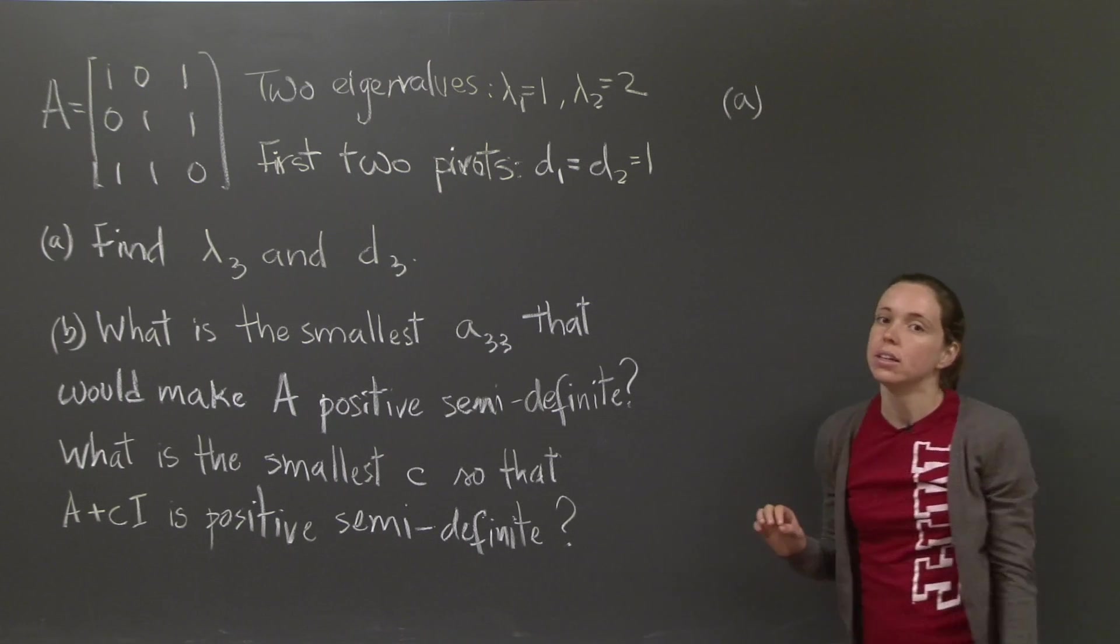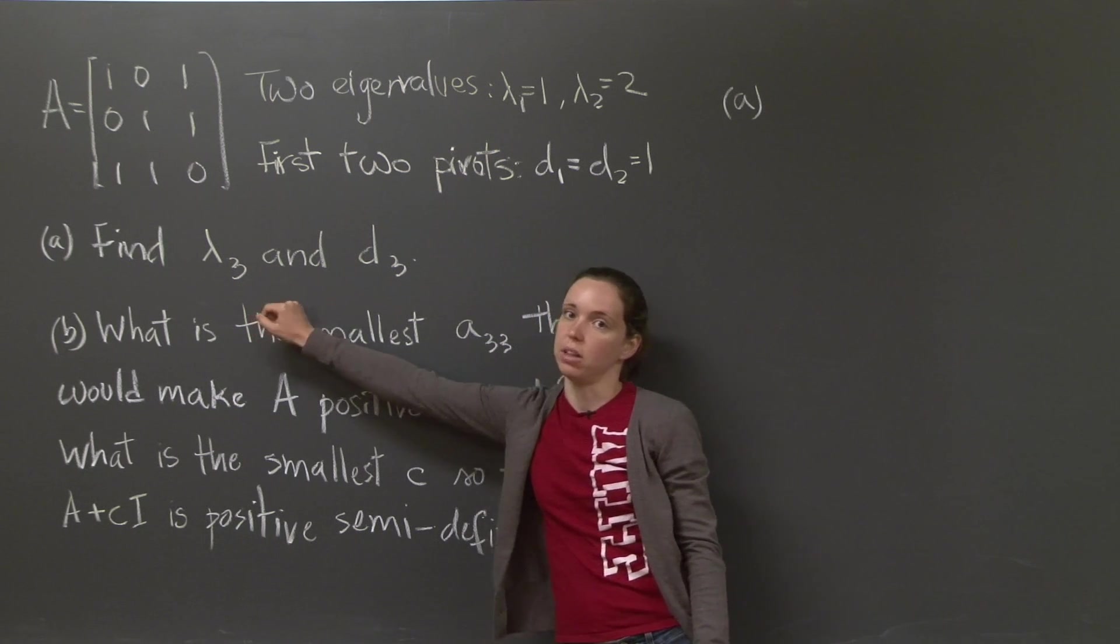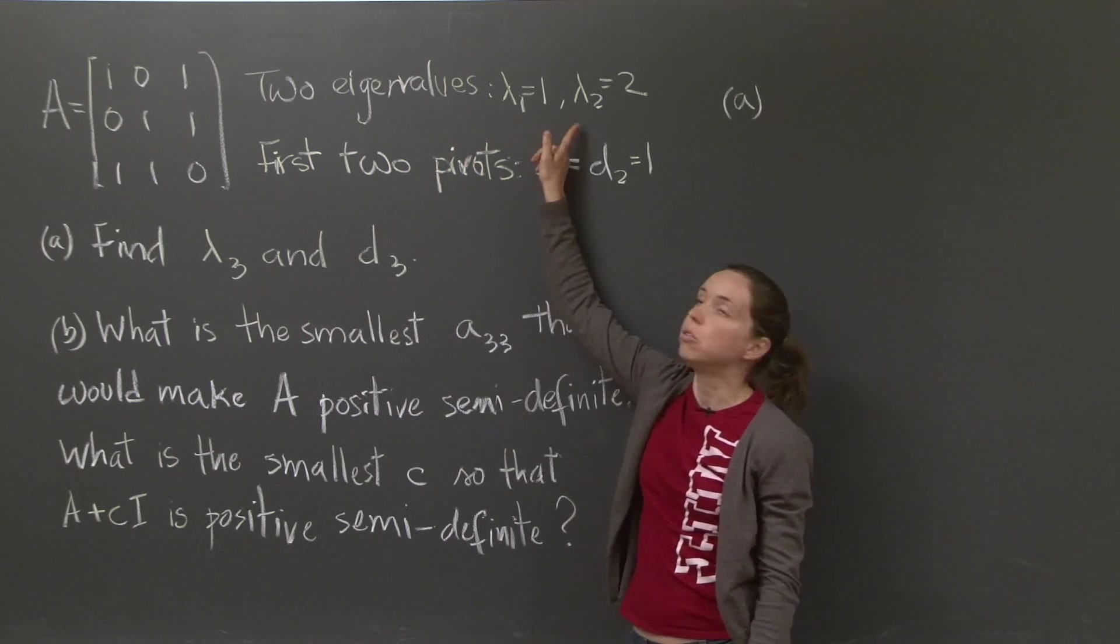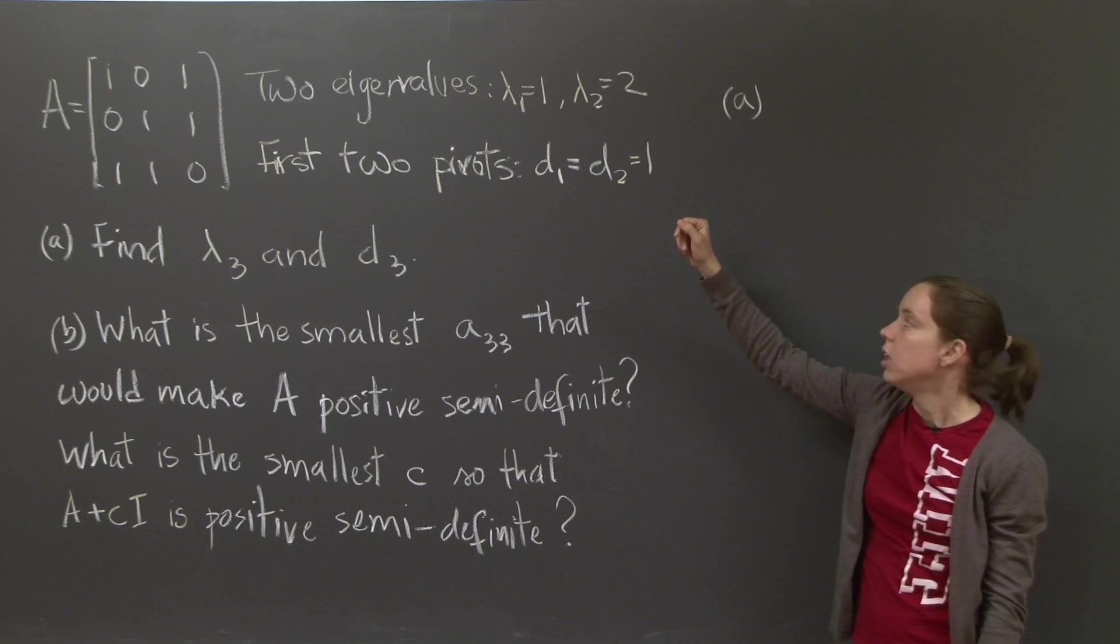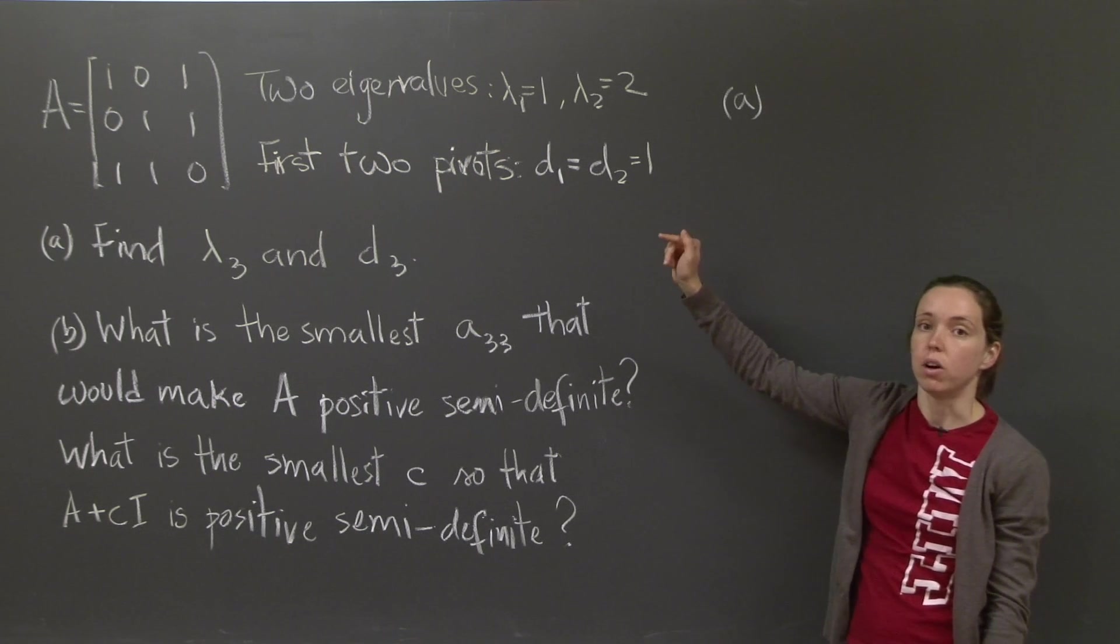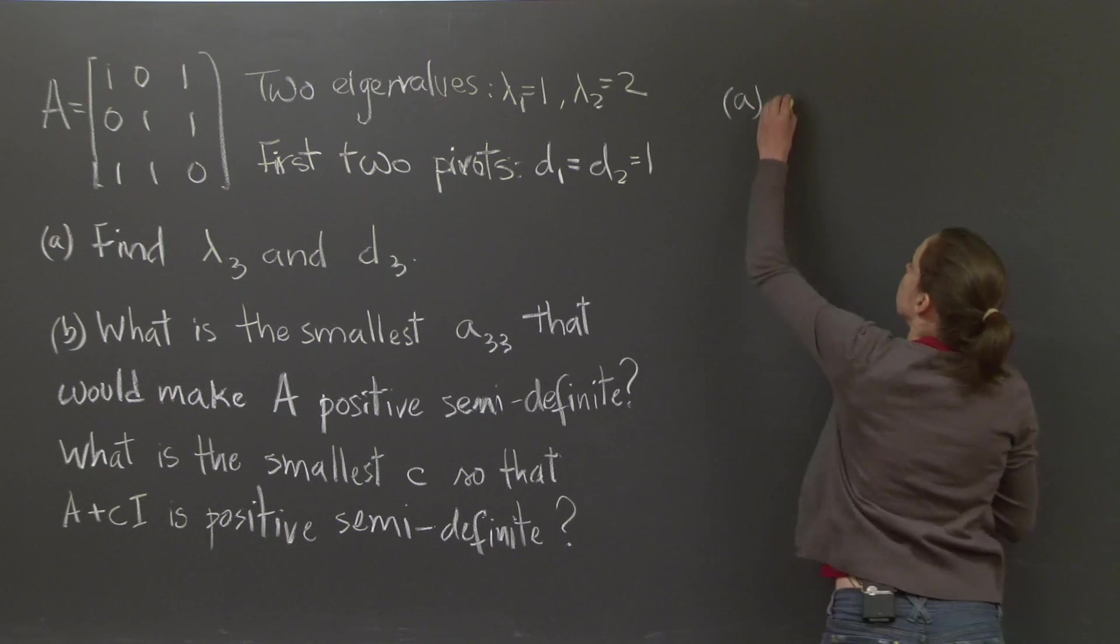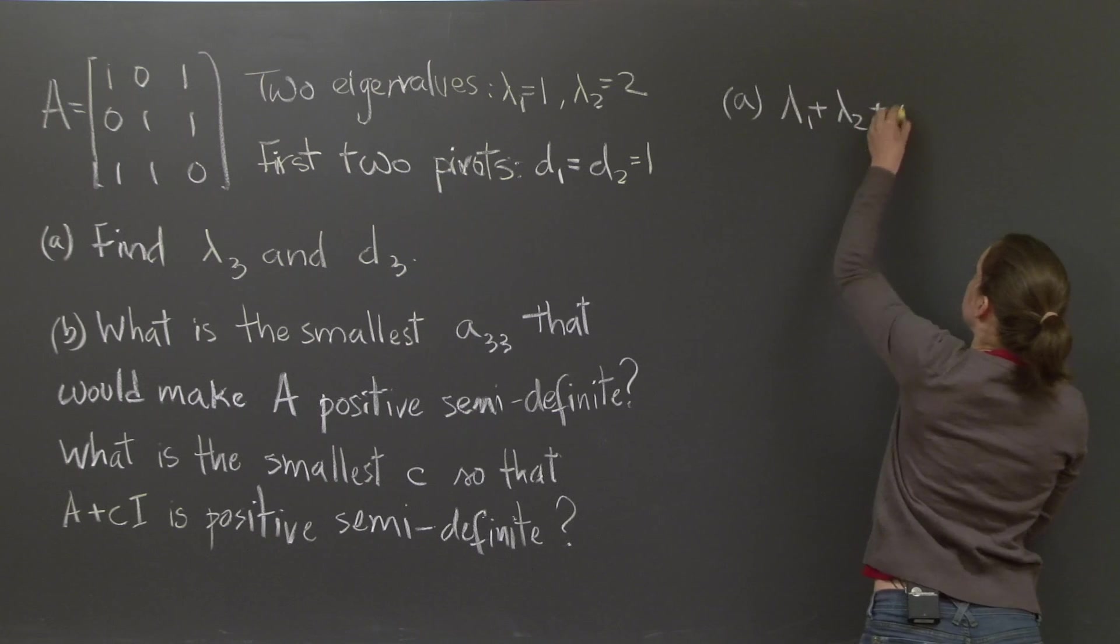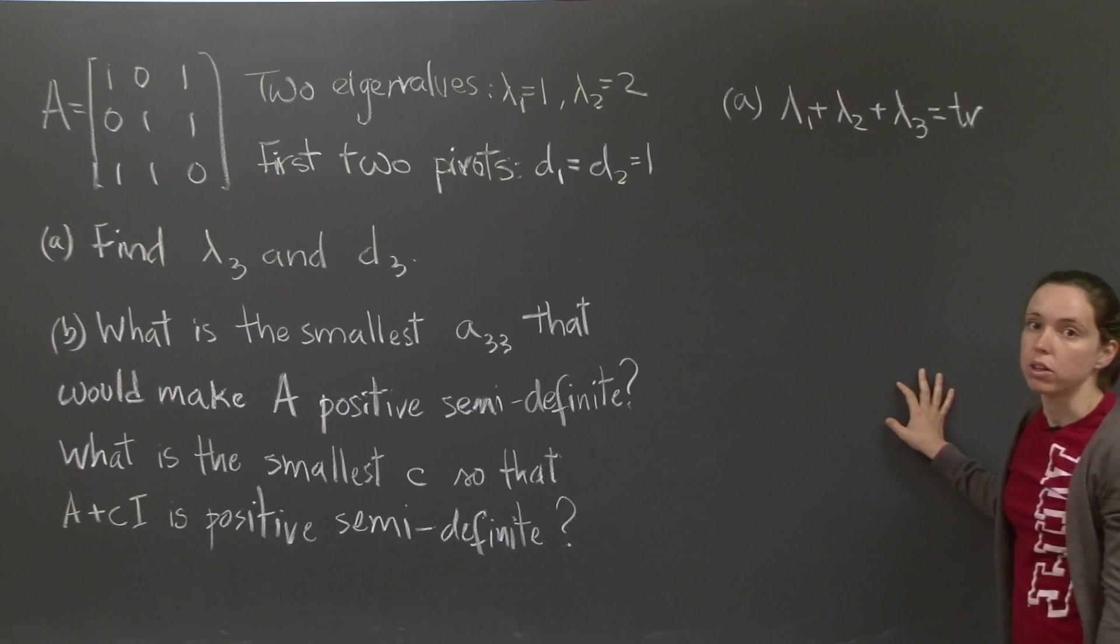Part A. Well, you want to know what the third eigenvalue is. And you know what the first two are. What else do you know about eigenvalues in the matrix? You know that the sum of all the eigenvalues of the matrix is equal to the trace of the matrix. So lambda 1 plus lambda 2 plus lambda 3 is equal to the trace of the matrix.